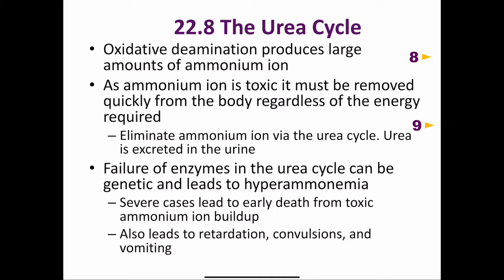This pathway, called the urea cycle, is the method by which toxic ammonium ions are kept out of the blood. The excess ammonium ions incorporated in urea are excreted in the urine.